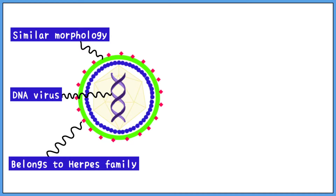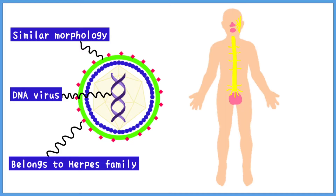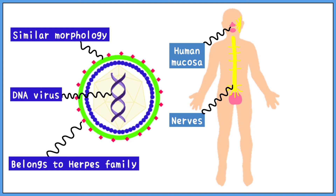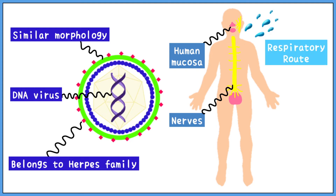In the human body, VZV has its reservoir in the human mucosa and in the nerves. The virus predominantly spreads through the respiratory route but could also spread through physical contact.